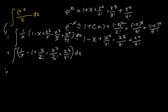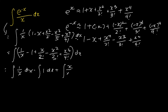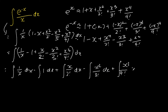So this whole function can be split down into five different integrals. The first one will be the integral of 1 over x dx. The second integral is the integral of 1 dx. The third integral is the integral of x over 2 factorial dx. The fourth integral is the integral of x squared over 3 factorial dx. And the last integral is the integral of x cubed over 4 factorial dx. We can now proceed to do our integration.